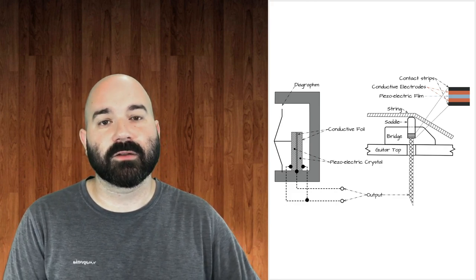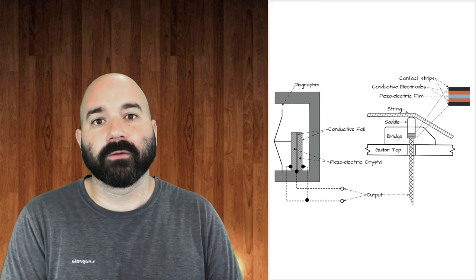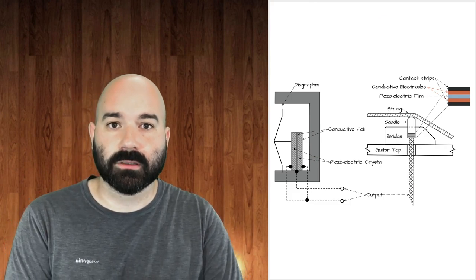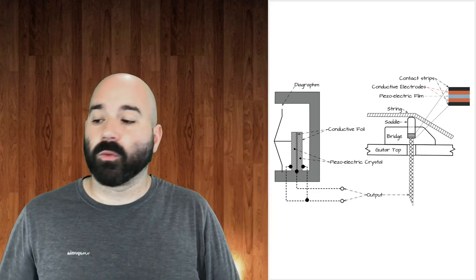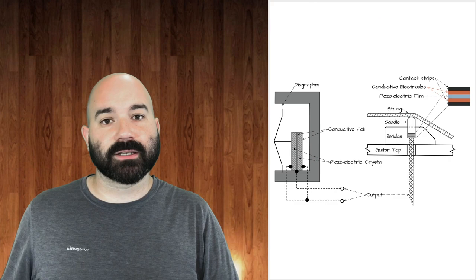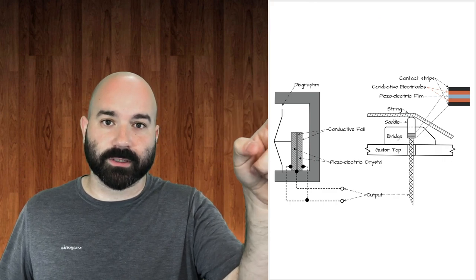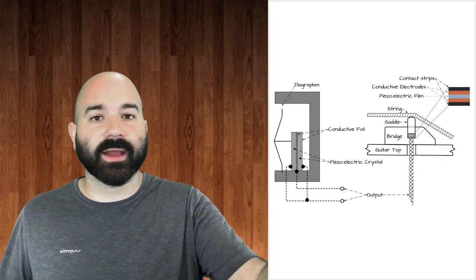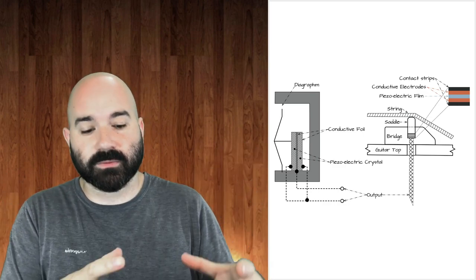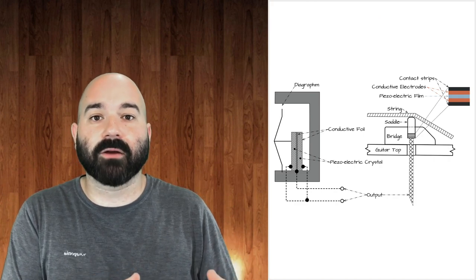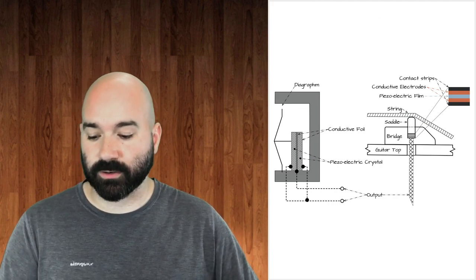Not picking up acoustic sound is the main disadvantage, but it can also be an advantage. For instance, on cymbals: when you use a contact microphone instead of an overhead, hitting a snare drum—picked up by its own mic—won't bleed into the cymbal's contact microphone because it only picks up physical sound waves from the cymbal itself. So it's a disadvantage or advantage depending on the scenario.